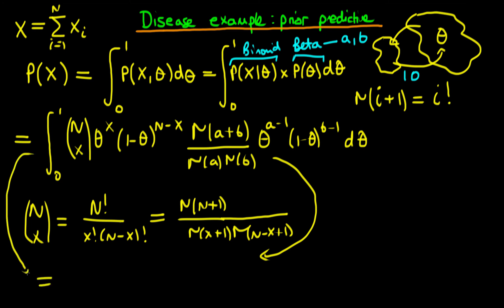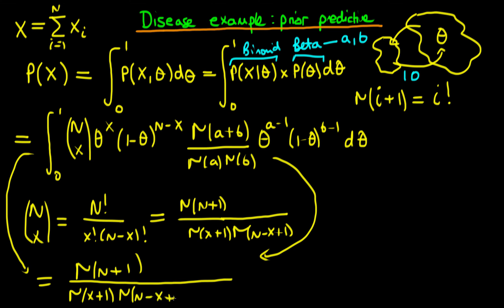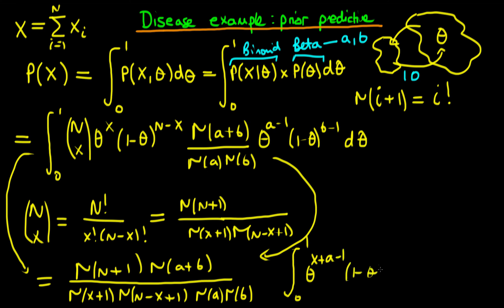We can take all of that outside the integral since none of it depends on theta, leaving the integral from 0 to 1 of theta to the power (x plus a minus 1) times (1 minus theta) to the power (n minus x plus b minus 1) d theta. In the next video we'll continue to derive the beta binomial distribution and discuss what it looks like when we have a uniform prior.